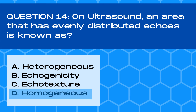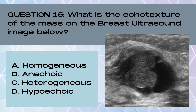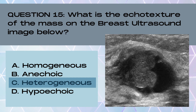A homogenous echo texture is a benign feature when characterizing a breast mass. Question 15. What is the echo texture of the mass on the breast ultrasound image below? A. Homogenous, B. Anechoic, C. Heterogeneous, or D. Hypoechoic. And the answer is C. Heterogeneous. The echo texture of a mass is determined by looking at the pattern of the brightness levels. If there's an uneven distribution of echoes within the mass, the mass is known as heterogeneous. This particular mass has both solid and cystic components, so it would be known as complex echogenicity, with both anechoic and hypoechoic spaces — making it heterogeneous.